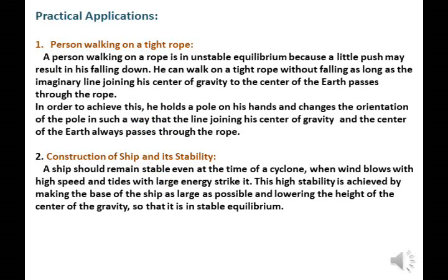Practical Applications: A person walking on a tight rope is in unstable equilibrium because a little push may result in his falling down. He can walk on a tight rope without falling as long as the imaginary line joining his centre of gravity to the centre of earth passes through the rope. He holds a pole and changes its orientation so that the line joining the centre of gravity and the centre of the earth always passes through the rope.